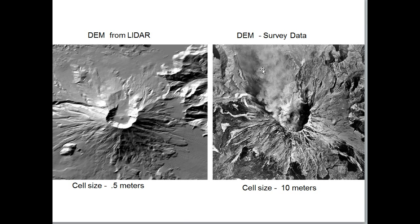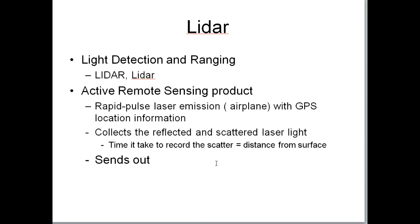Why is the left one so much clearer? It was created from a newer technology called LIDAR, which stands for Light Detection and Ranging. LIDAR is a technique of active remote sensing — as opposed to passive remote sensing like photography, which uses solar energy to reflect images. Active remote sensing means sending out a signal. With LIDAR, an airplane sends out a laser pulse with GPS location information and collects the bounce-back or scattered light. The time between sending the pulse and its return is used to determine the distance from the surface and, therefore, the elevation.